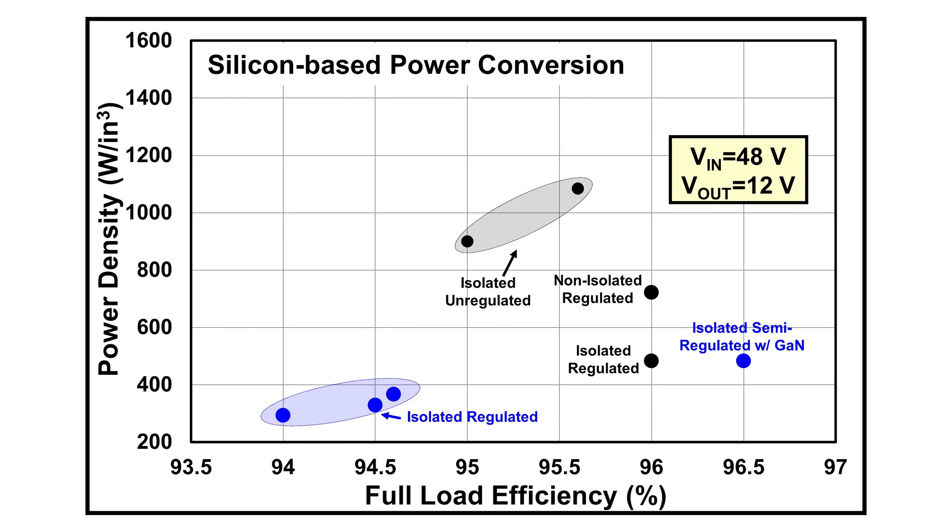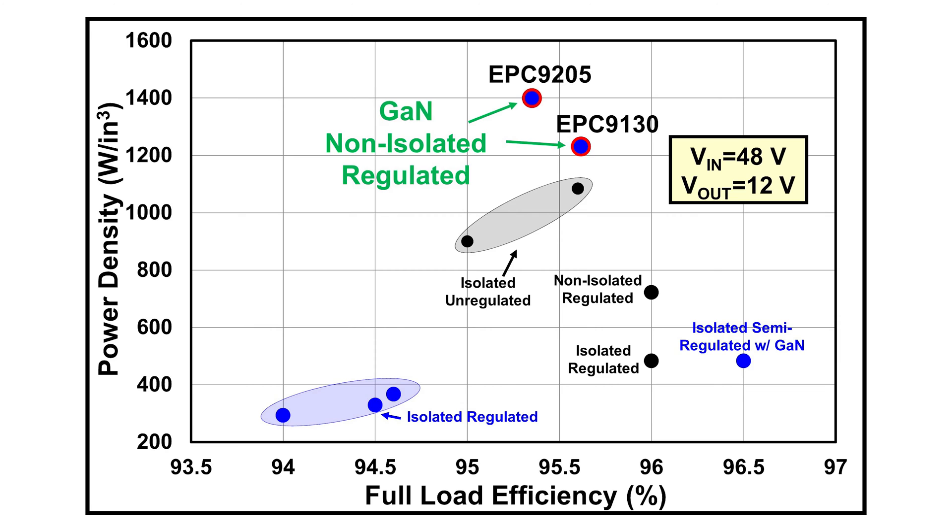Silicon-based power conversion is not keeping pace. However, GaN technology increases the efficiency, shrinks the size, and reduces system cost.